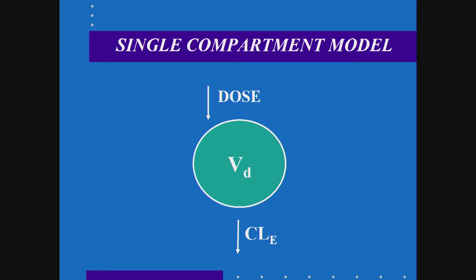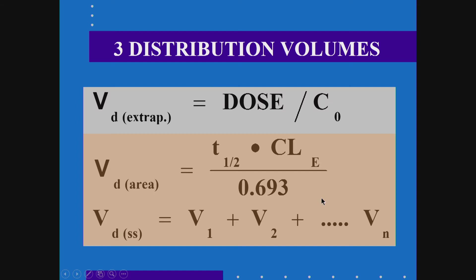We use a single compartment model of drug distribution and elimination: we administer the dose intravenously into a hypothetical single body compartment where the drug distributes, and then the parameter of elimination clearance governs its removal. The volume of distribution by extrapolation is estimated as the ratio of dose over the extrapolated initial concentration C₀, assuming instantaneous distribution. For digoxin given an initial digitalization dose of 0.75 milligrams resulting in a concentration of 1.4 nanograms per ml, this yields a very large apparent volume of distribution of 536 liters — which does not agree with physiological body fluid compartments but is a critical pharmacokinetic parameter.